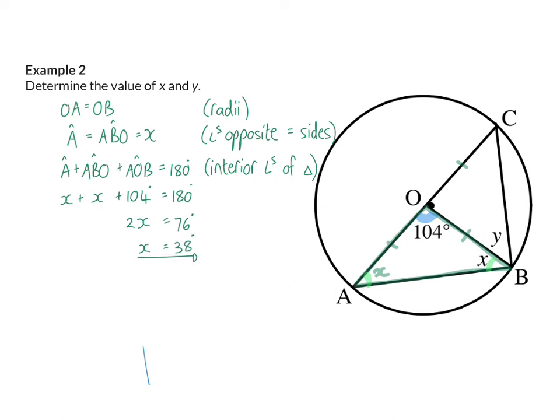To solve x, we only used previous knowledge. If we now look at y, we will use our new theorem. Our new theorem says that the whole of angle B is 90 degrees, because it is formed from CA, which is our diameter. Angle B consists of x and y.